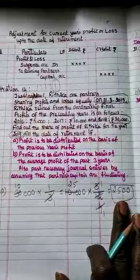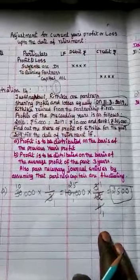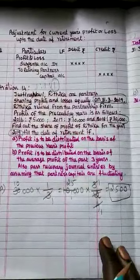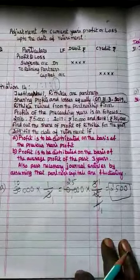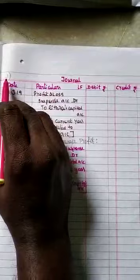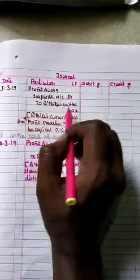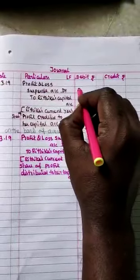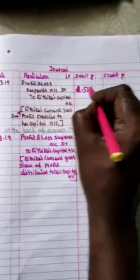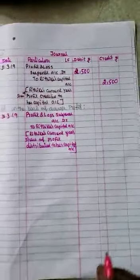The journal entry to record this is: Profit and Loss Suspense Account debit, to Hrithika's Capital Account ₹2,500. So the Profit and Loss Suspense Account is debited and Hrithika's Capital Account is credited with ₹2,500. This entry is now recorded.